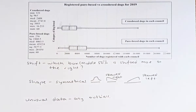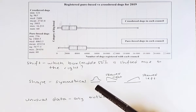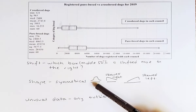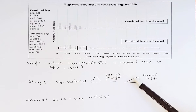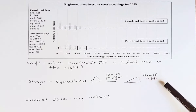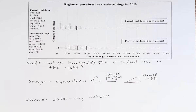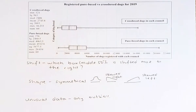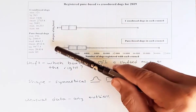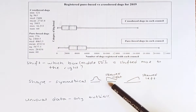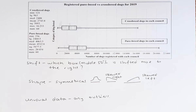For shape, there are three main shapes: symmetrical (a normal bell-shaped curve), skewed to the right, and skewed to the left. If there is no clear shape, you call it an irregular shape. In our case, you look at the dotplot. It looks like a shape going downwards, so we can say that both the crossbreed and purebred dogs are skewed more to the right.